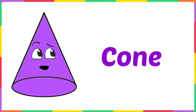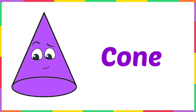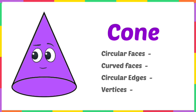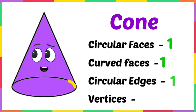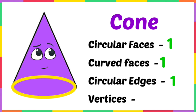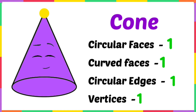Hi, I am a cone! I have a pointy top and a round bottom. I am made up of two faces — one circular face and one curved face. This is my edge — I have one circular edge. This is my vertex — I have one vertex.